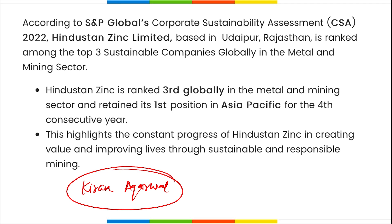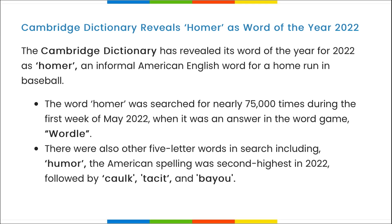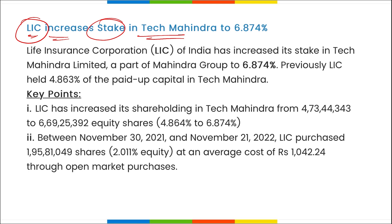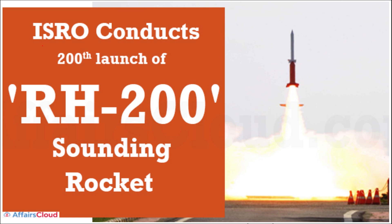Cambridge Dictionary has revealed 'homer' as the Word of the Year 2022. Homer is an informal American English word for a home run in baseball. LIC has increased its stake in Tech Mahindra to 6.874%, up from the previously held 4.863%.